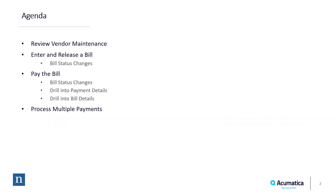The first thing we're going to do is review a couple of settings in vendor maintenance. Then we're going to enter and release a bill and talk about how the status of the bill changes when we do that. We'll show you how to pay the bill, talk about how the status changes, and drill into that payment information and back into the bill details as well. Lastly, we'll talk about how to make multiple payments, because that's really what most people do as opposed to paying a bill one at a time.